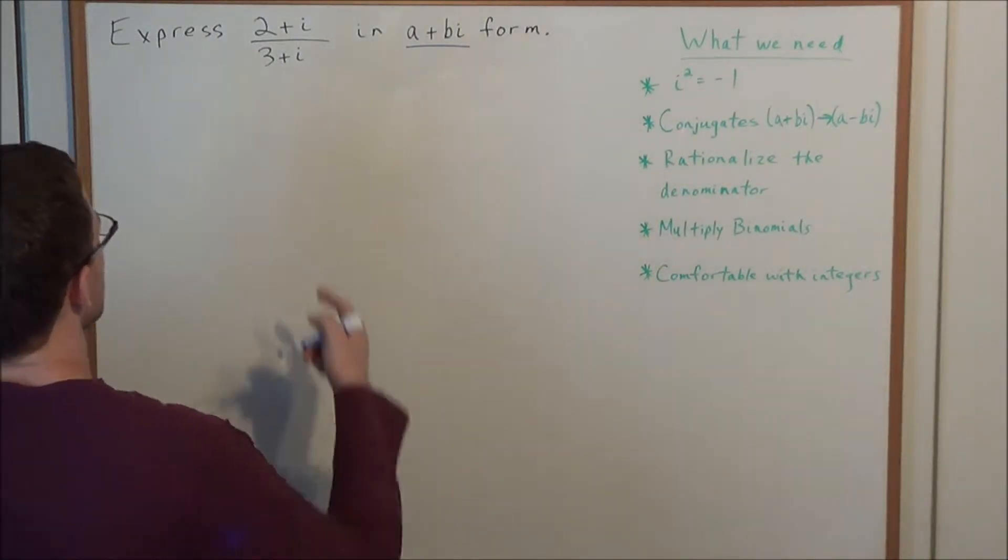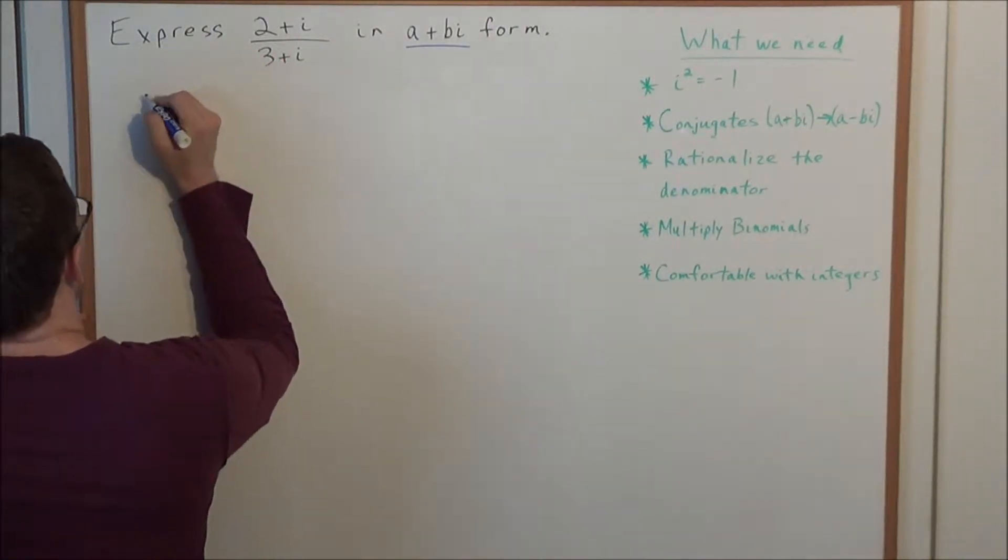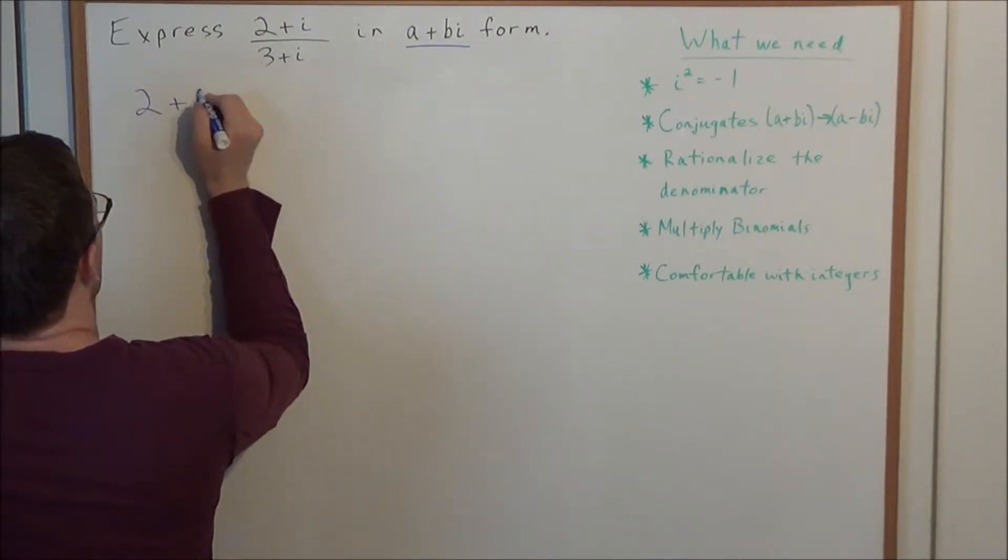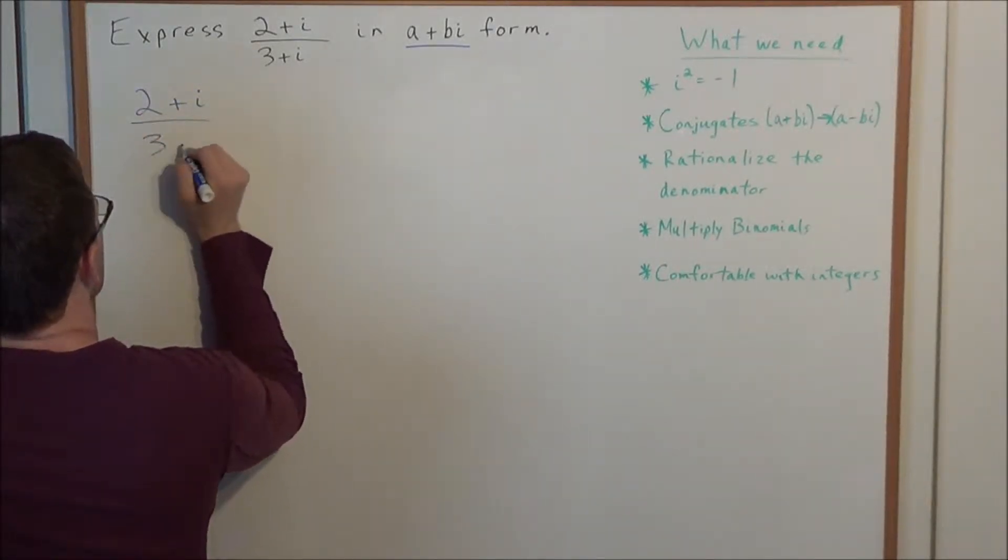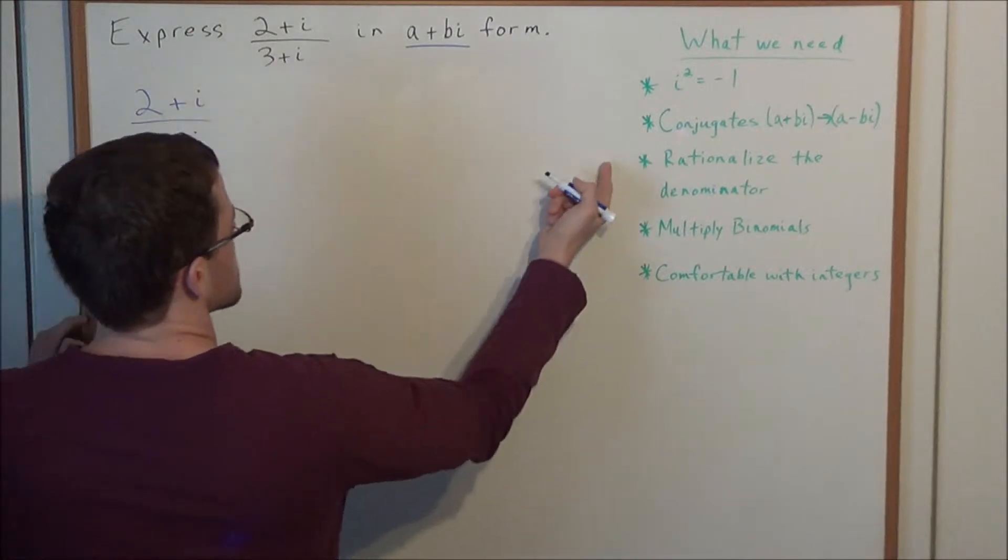So let's go ahead and get started. We're looking at 2 plus i divided by 3 plus i. And what we need to do is we need to, in some sense, rationalize this denominator.